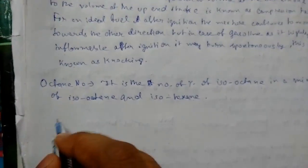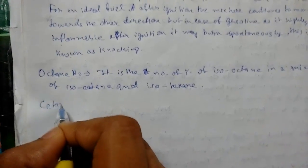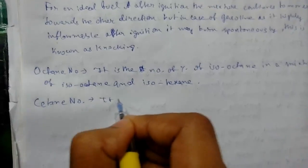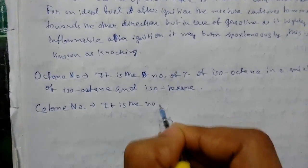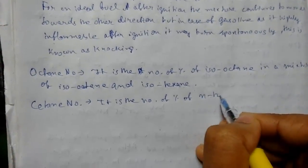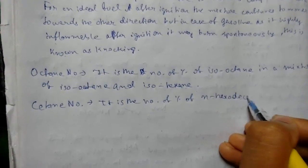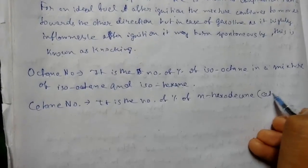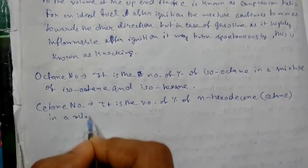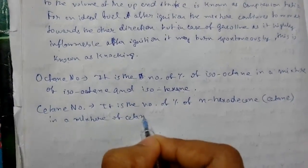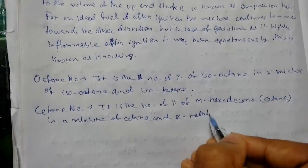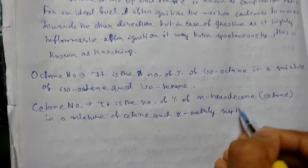Next we will see the cetane number. It is the percentage of n-hexadecane — whose common name is cetane — in a mixture of cetane and alpha-methyl naphthalene.